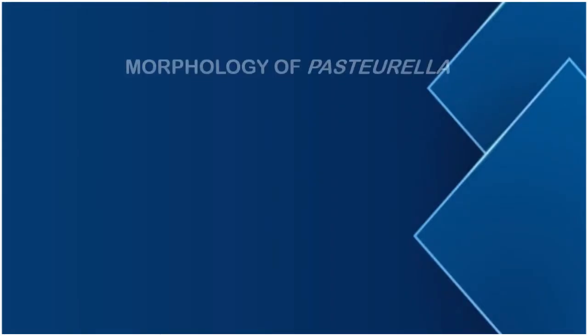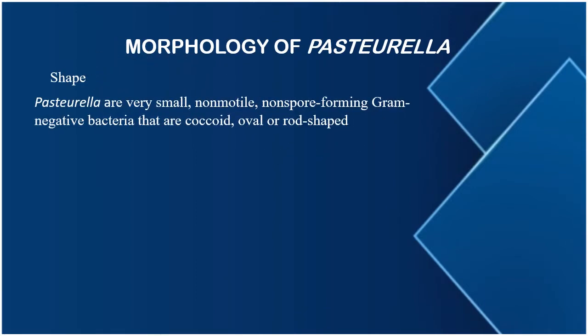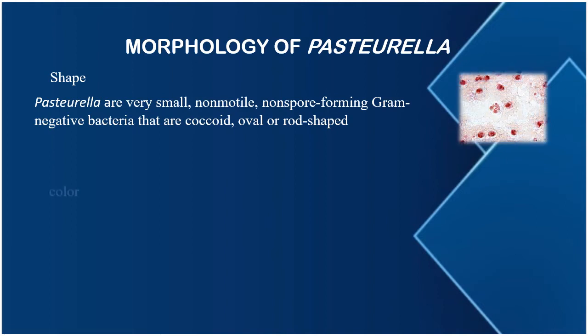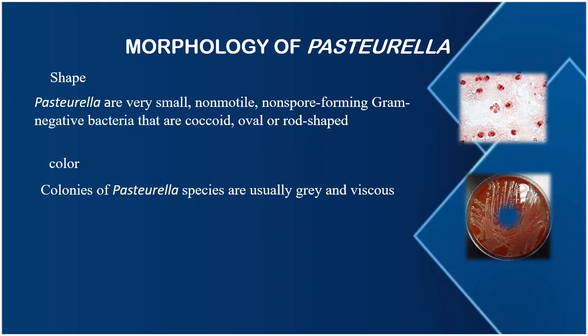Now let's move to the characteristics of it. First, we will discuss its shape. They are very small, non-motile, non-spore forming, gram-negative bacteria that are coccoid, oval, or rod shaped. It is a facultative anaerobe that can survive in both conditions, with or without oxygen. The color of the colonies of Pasteurella species are usually gray and viscous. The size can vary from 0.5 by 1.2 micrometers.